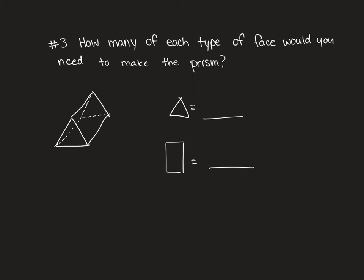Question three is question three. There's only one example, and they'll ask you how many of each type of face would you need to make the prism? So how many triangles would I need to make this prism? I would need two. And how many rectangles would I need? I would need three.